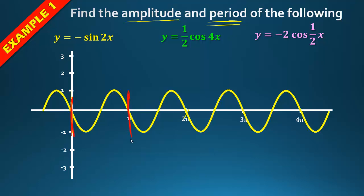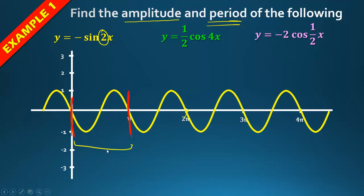From here to here is one period — the time for the curve to complete one cycle. We take 2π divided by 2, which gives π. So one period, instead of taking 2π, will only take π. The amplitude is still 1, and the period is now π.